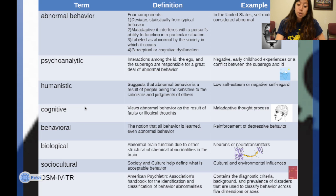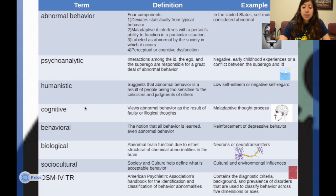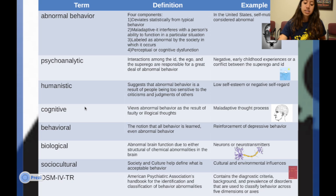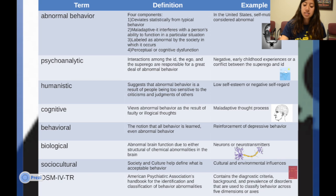The humanistic view suggests that abnormal behavior is a result of people being too sensitive to criticisms and judgments of others — for example, having low self-esteem or a negative self-regard. Now looking at the cognitive view: it sees abnormal behavior as a result of faulty or illogical thoughts, which reinforces maladaptive thought processes.